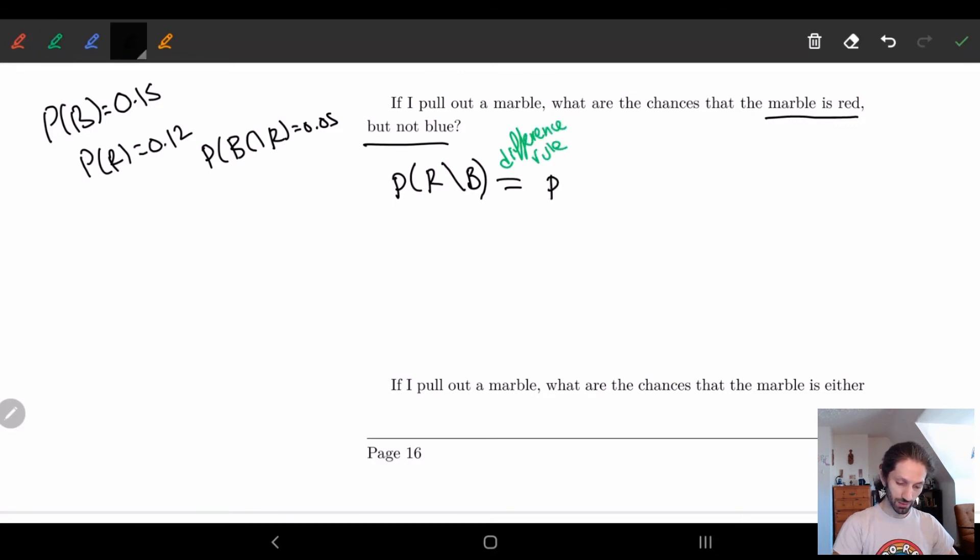And we get the probability of red minus the probability of red and blue. In the book, this example is wrong because they don't have the proper difference rule, PS. So don't follow the book. So here we can just plug in these numbers and we get 0.07. Well, follow the book. The book is normally good. Anyway, so don't listen to me. And we get a 7% chance that it's red, but not blue.